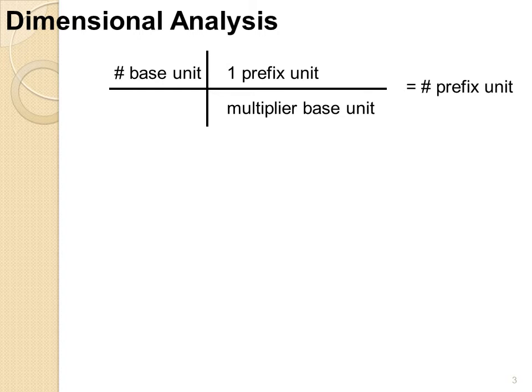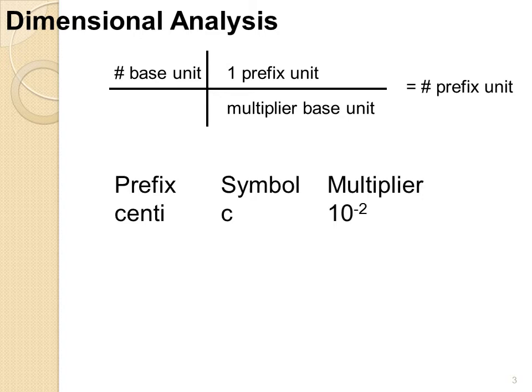Here's an example. Let's say we wish to take meters and convert them into centimeters. First, we need to know how many meters. In this case, I'll do 1.234 meters. And I'll take that multiplied by 1 centimeter divided by the multiplier, which is 10 to the minus 2, or 1 one-hundredth of a meter. This gives me 123.4 centimeters.